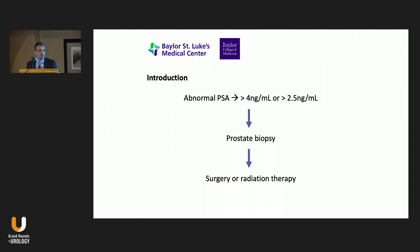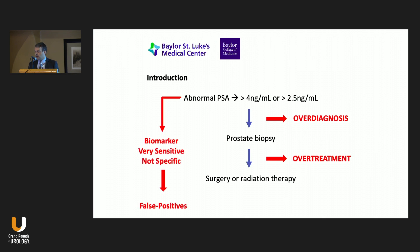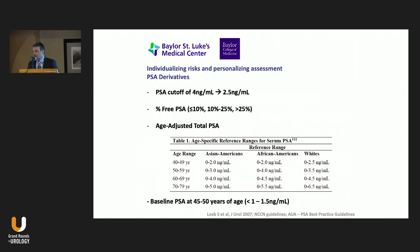PSA is not a simple biomarker where you have a positive or negative — still a lot of people manage it that way, and they see elevated PSA and automatically it goes towards biopsy and towards treatment. You're all familiar with over-diagnosis issues, over-treatment issues, all the controversy around it. That's because the biomarker is very sensitive, but it's not specific for cancer — it's specific for prostate but not for cancer — and that leads to a lot of false positives. So how can we mitigate and utilize risks and try to personalize assessment?